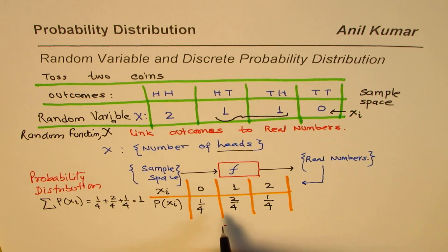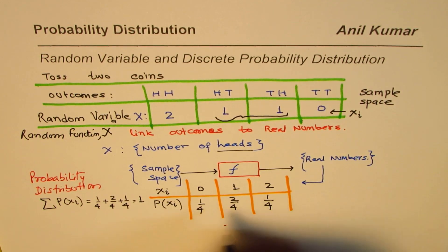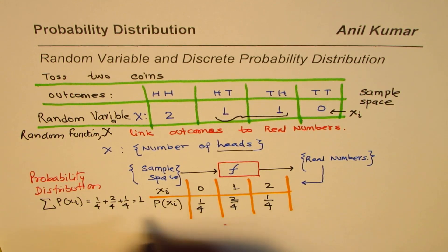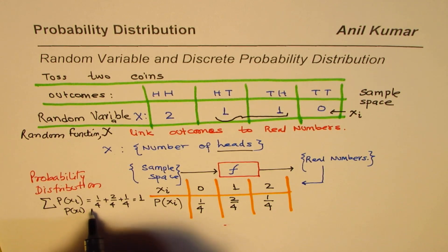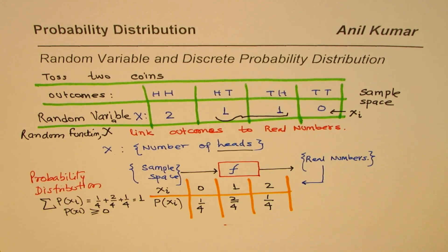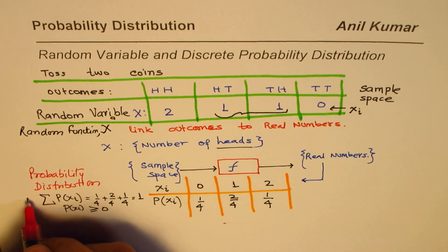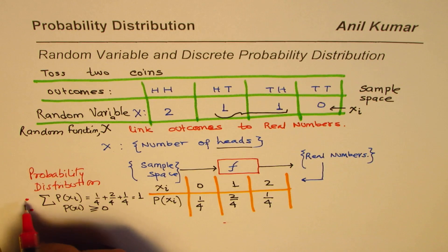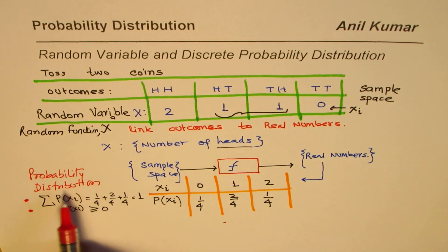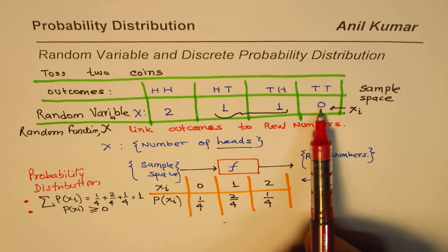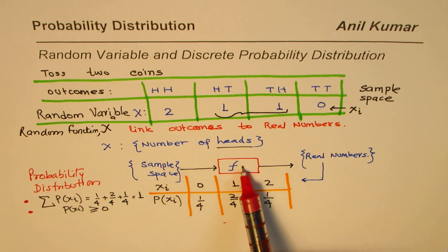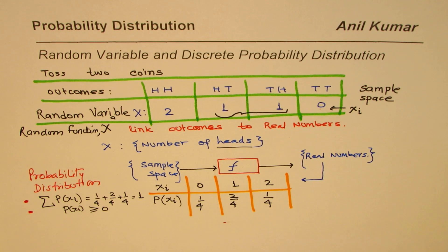The second thing to note is that the probability of each outcome is always greater than or equal to zero — it is always positive. So in a probability distribution, the probabilities sum up to 1 and are always greater than or equal to zero. These are discrete probabilities.